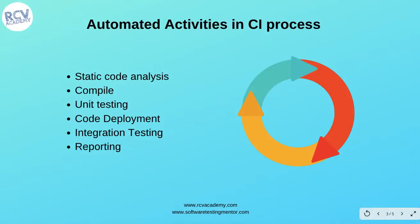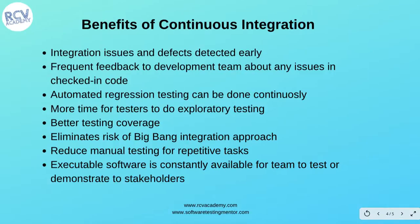Some of the benefits of continuous integration: it addresses integration issues and defects very early. As soon as there is any failure in unit test execution, build compilation, or any step of the CI process, you can easily detect that failure. Automated email notifications will tell you whether the build or test has passed or failed, and at which step the failure happened.